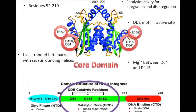If these three residues are mutated, the protein loses its function. These same residues are also found to have the same role in other retroviruses and integrases. It has also been found that there are two lysine residues, K156 and K159, located close to the DDE motif, and they are involved in viral DNA binding by interacting with the sugar phosphate backbone of the DNA.